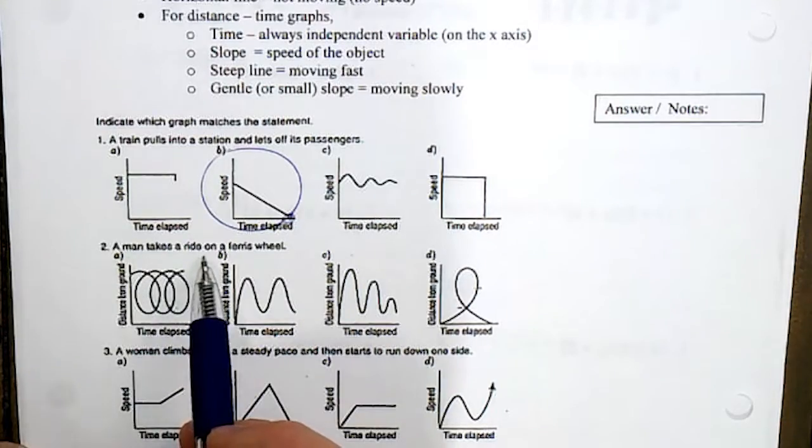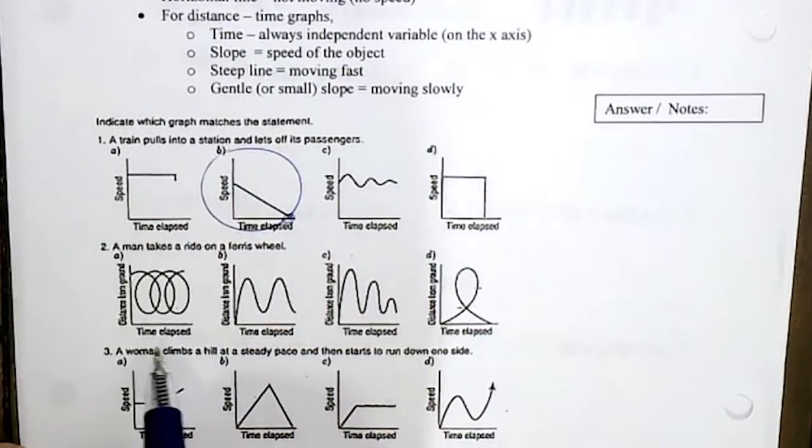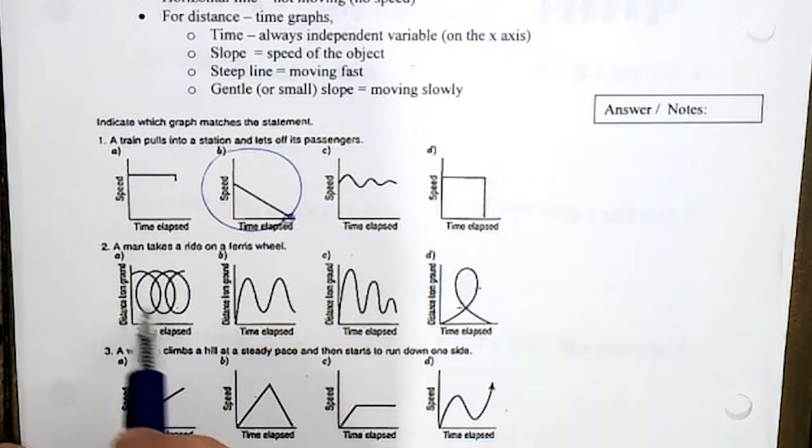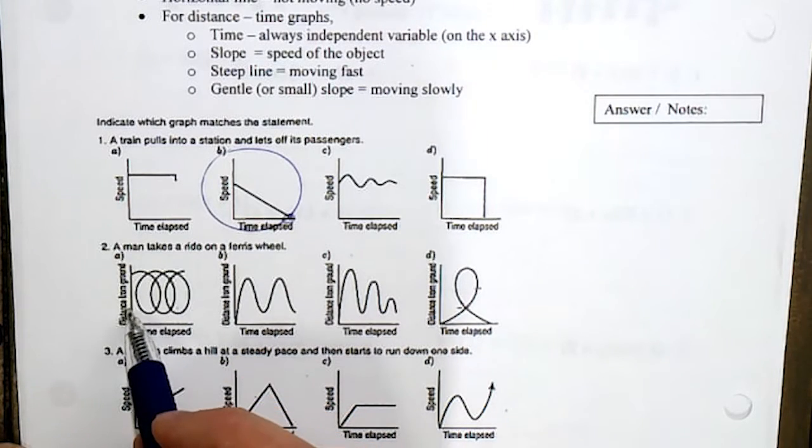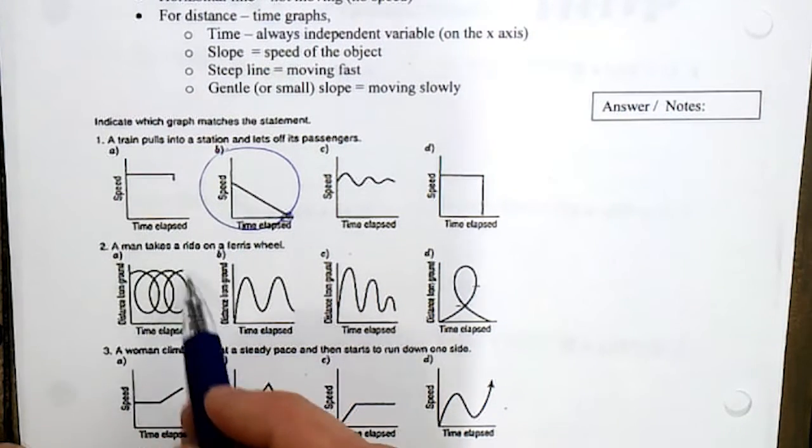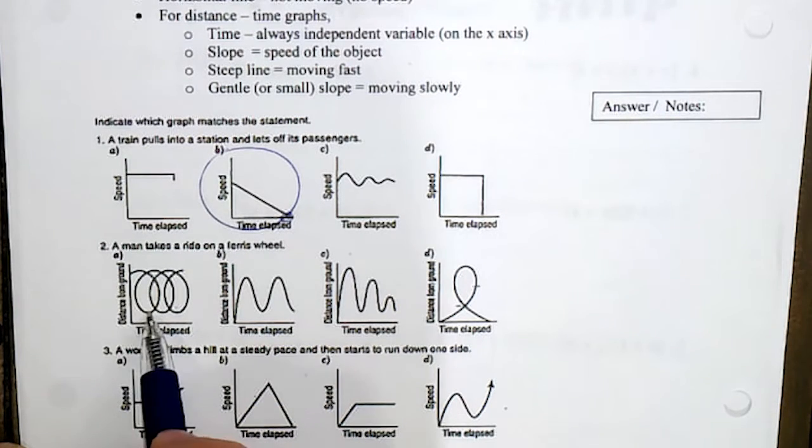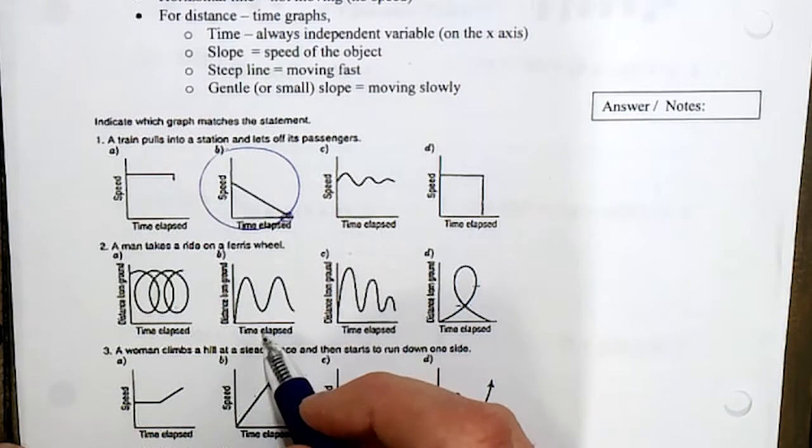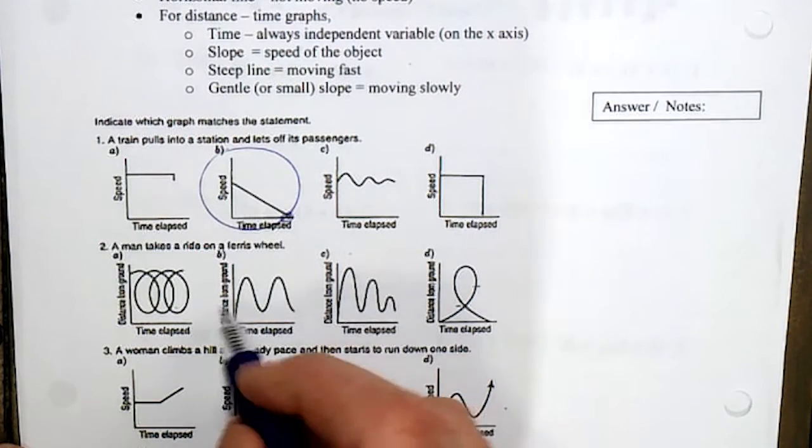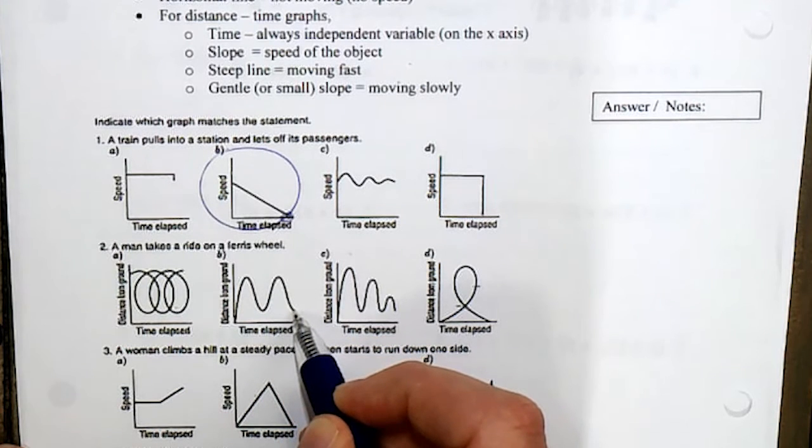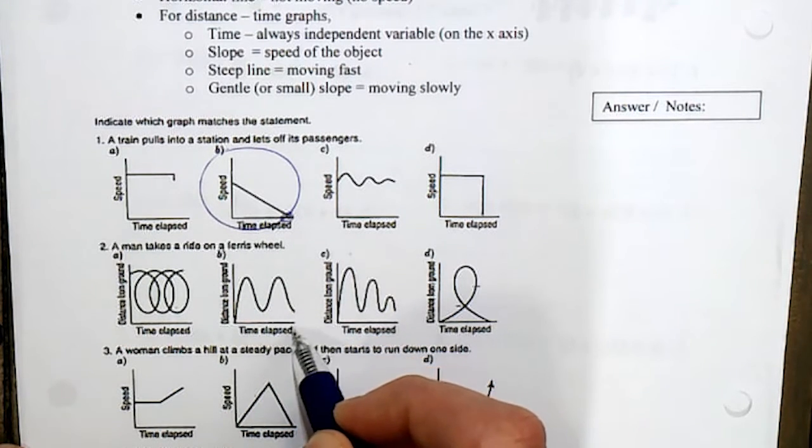Now a man takes a ride on a ferris wheel. The key thing is time elapsed is along the bottom. Right away we can see, well, this can't be possible - you're actually going backwards in time then forwards in time, you can't go back on yourself when you have time at the bottom. So definitely not this one. Time elapsed, so we're looking at distance from the ground. He goes up, down, up, down - looks fairly good, but I'm just wondering, does he get off?